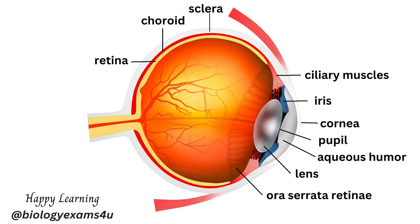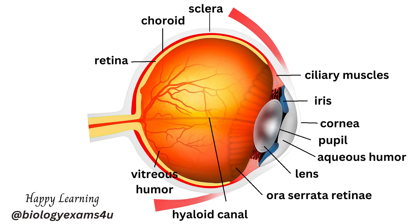The hyaloid canal is a small transparent canal running through the vitreous body from the optic nerve disc to the lens. The hyaloid canal appears to have no function in the adult eye, though it is a fetal remnant structure that can be seen.